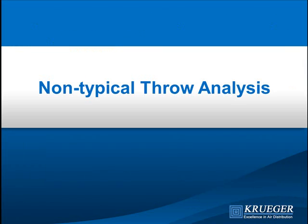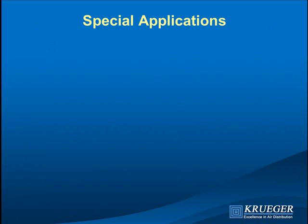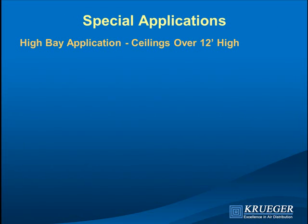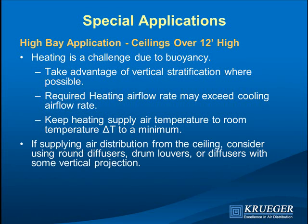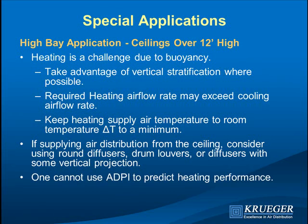Not all spaces have nine-foot ceilings with diffusers. In a high-bay application with a ceiling more than 12 feet high, heating is a challenge — hot air rises, cold air falls. Cooling will come down naturally, but for heating, put the diffuser low if possible. Calculations may show that the heating airflow rate needs to be twice the cooling airflow rate to achieve adequate throw. Keep the heating delta-T down to help increase airflow. ADPI cannot be used for ceilings over 12 feet or for heating applications.